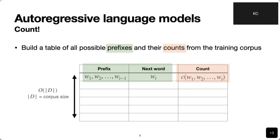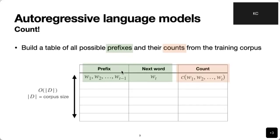If we had to build this language model without worrying about neural networks, the first thing we need is counting. We're going to build a table of all possible prefixes and their counts from the training corpus. We go through the dataset D — often called a corpus since it consists of text — and for each example, we look at all possible prefixes. For each prefix, we know what the correct next word is, and we count all possible ways a next word follows a given prefix. It's going to be a very large table, with as many rows as words in our dataset.